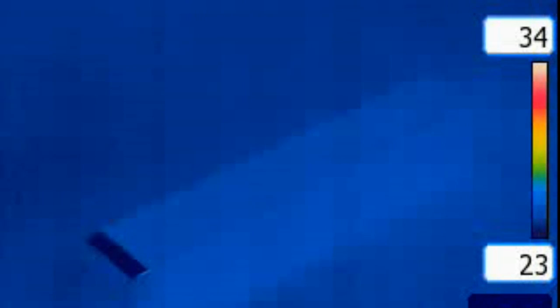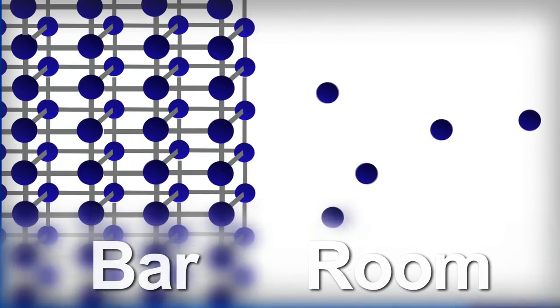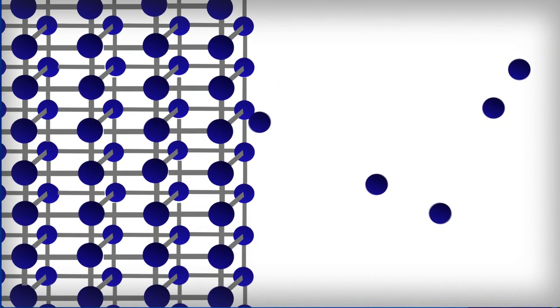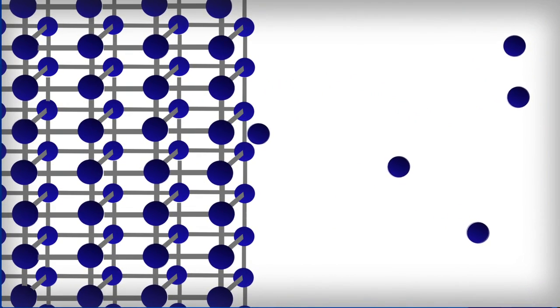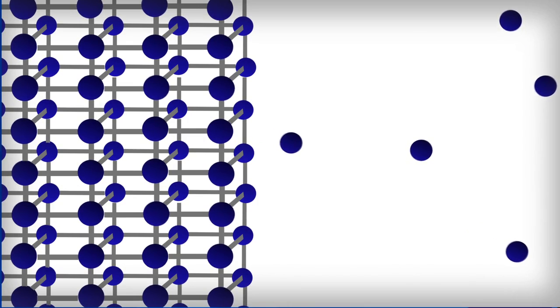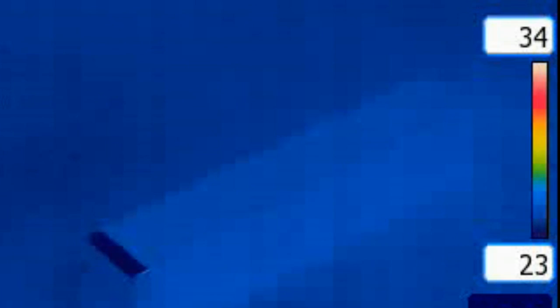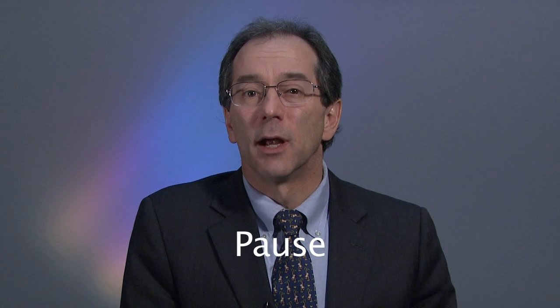The temperature of the bar is 25 degrees Celsius, and the temperature of the room is also 25 degrees Celsius. Even though the molecules in the air are colliding with the atoms on the surface of the bar, there is no net energy transfer between the room and the bar. The temperature of both the bar and the room remain constant at 25 degrees Celsius. In thermodynamic terms, we say that the bar and the room are in thermal equilibrium. Because there is no difference in temperature, there is no heat transfer between the bar and the room. What if we wanted the temperature of the bar to be larger than that of the room, and we wanted it to remain that way? Pause the video and think about how we might do this.